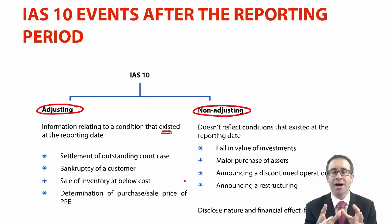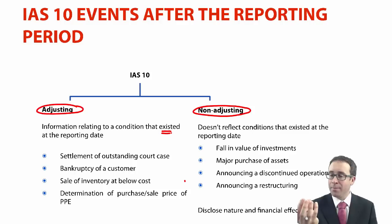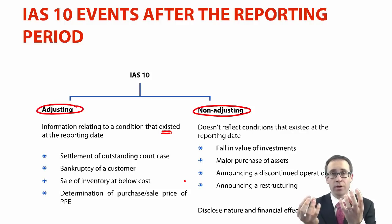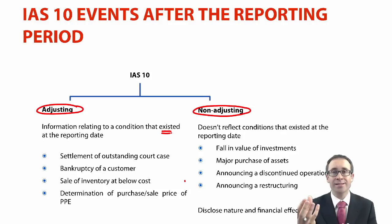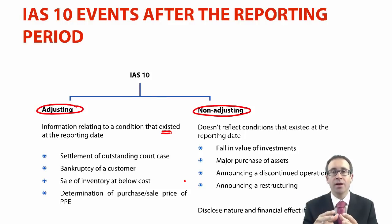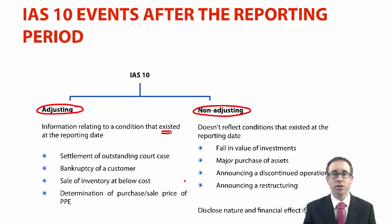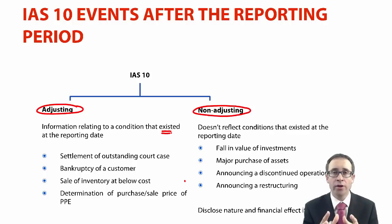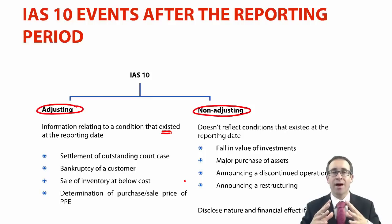The key aspect is to look at what happened at the reporting date and whether something has happened subsequently that allows us to update our knowledge about what was in existence at the reporting date. If it does, we adjust for it. If the condition did not exist, we make no adjustment whatsoever. I think the key within this standard is to learn the non-adjusting and the adjusting events — if you learn them, it makes life easier come the real exam.